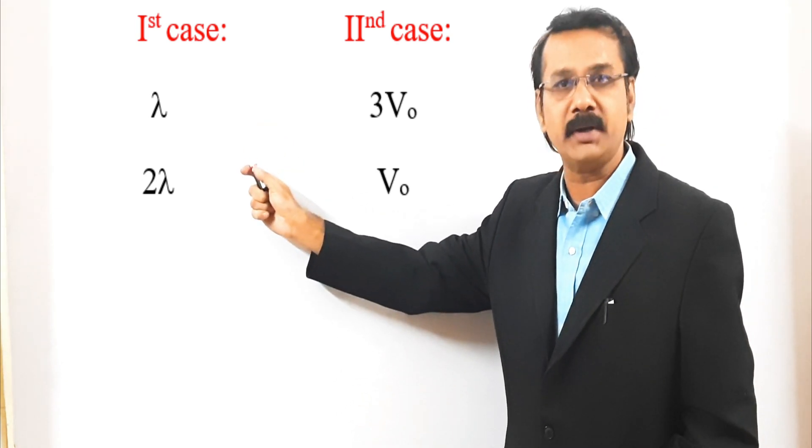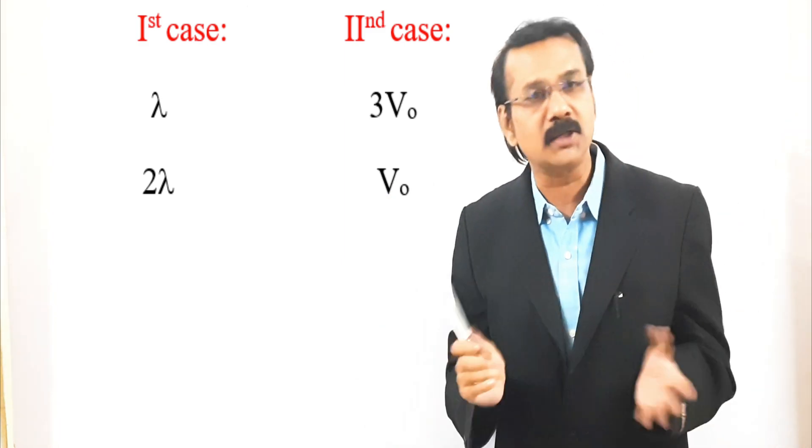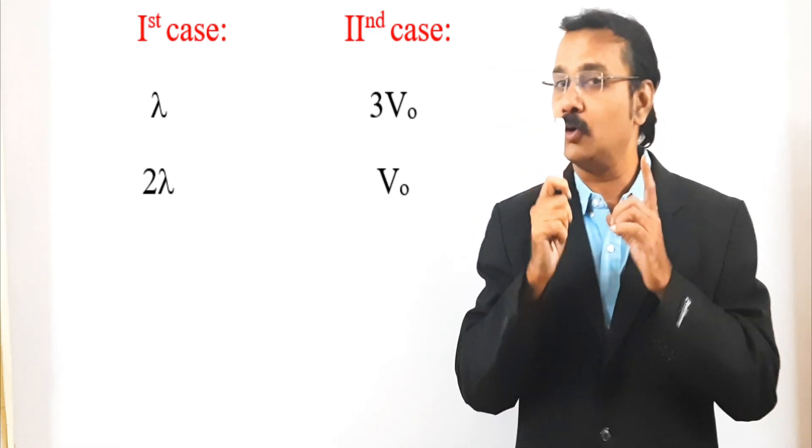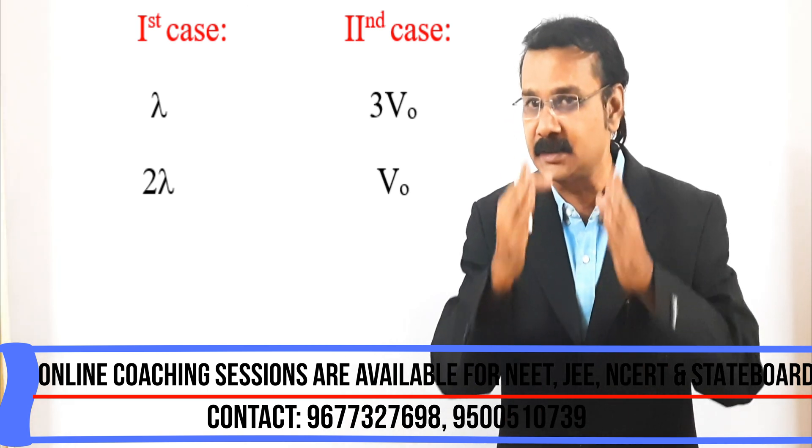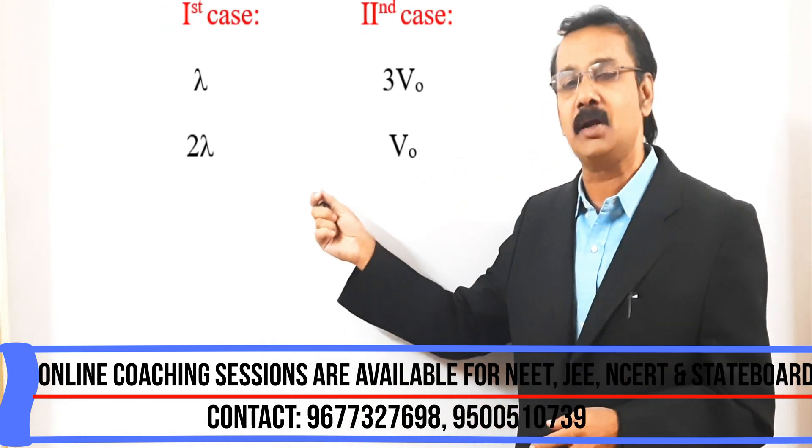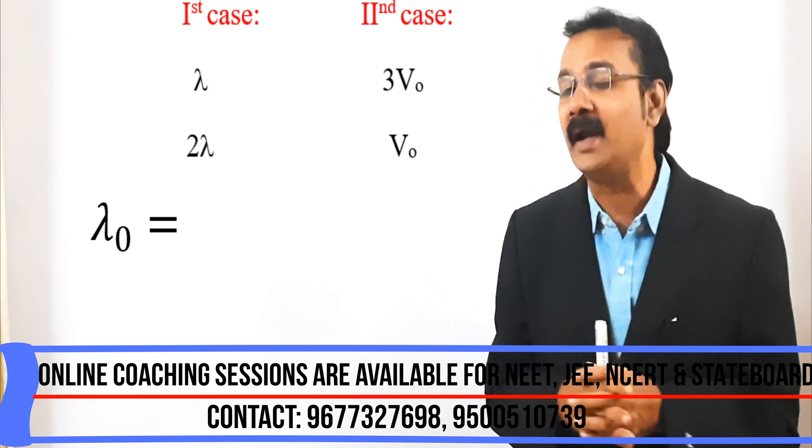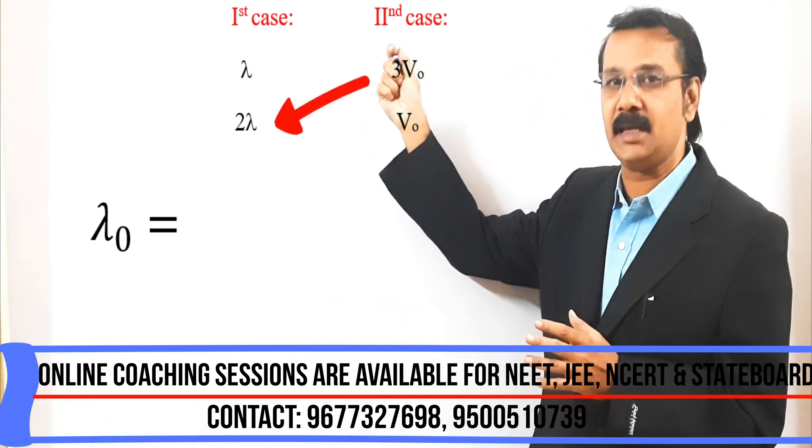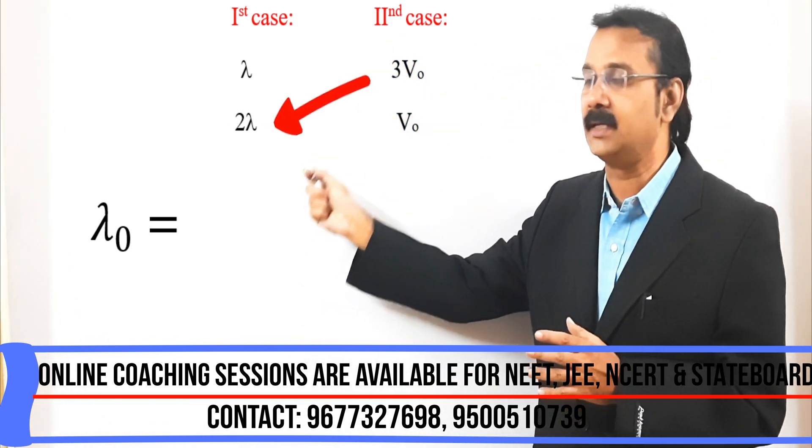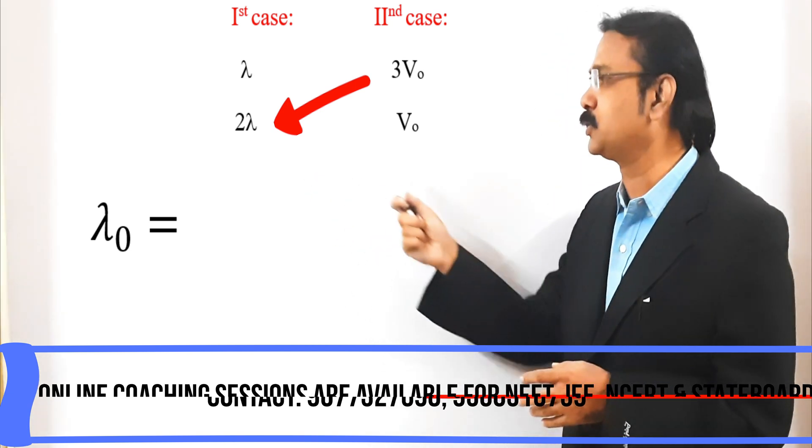You can see lambda in the left hand side and 3V0 in the right hand side. The next one is case 2. I have written 2 lambda here and on the right hand side I have written V0. Now, to go for the shortcut, what you have to do is, the question asks to find lambda naught. Lambda naught means it is threshold wavelength. Now I am writing lambda naught here is equal to. Now, the first number, how to find the number? You are going to cross multiply this 3 and this 2. See here, 3 and 2. If you multiply, we get 6.